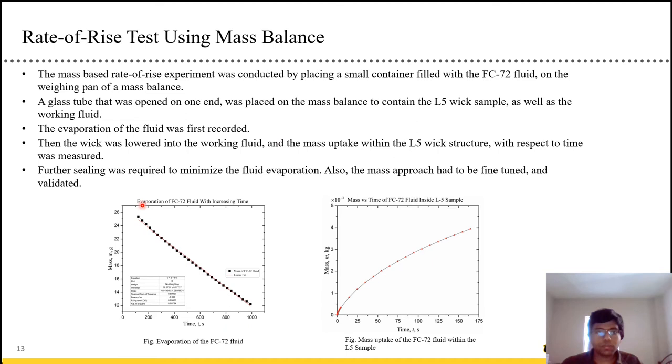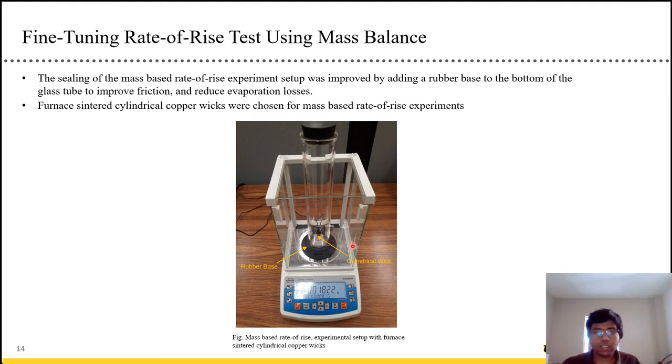And we started using a mass balance and measured the mass instead of visually finding the height. We first measured the rate at which the evaporation takes place. And we got this plot here. And then we found the rate at which the fluid goes up the wick structure. And we plotted it on the right hand image down there. This was also in ambient condition. So we had to minimize fluid evaporation. We had to seal the setup.